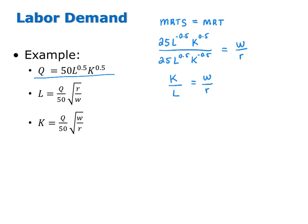We're trying to see how the cost minimizing amount of each input would vary with the input prices, so we're going to use simply W and R and not plug in numbers. At this point I'm going to cross multiply and solve for one of the inputs — I'm picking capital. Now we're going to plug this expression for capital into the production function. Output is the constraint into which I plug K equals W over R times L.